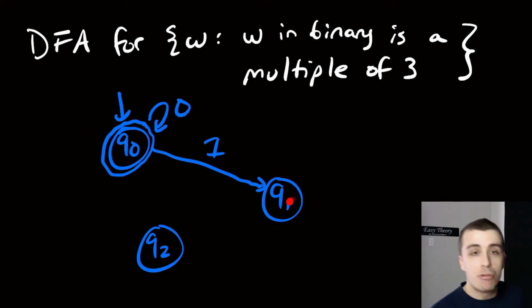Now for this state, if we have a remainder of 1, that means we got to multiply by 2. If we see a 0, multiply the remainder by 2, which means we should go over to q2.